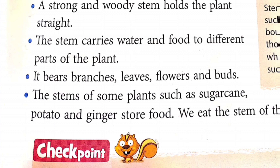The third function is that the stem bears branches, leaves, flowers, and fruits. You can see that on a plant, the main structure is the stem, and from the stem there are different branches. On those branches, leaves, flowers, and fruits are all attached.